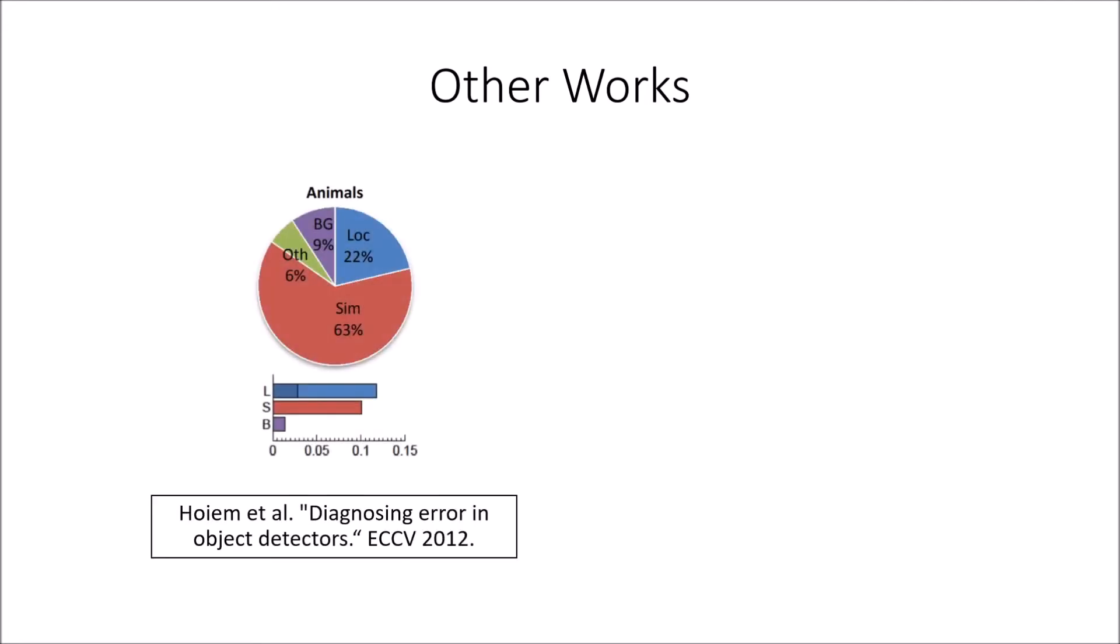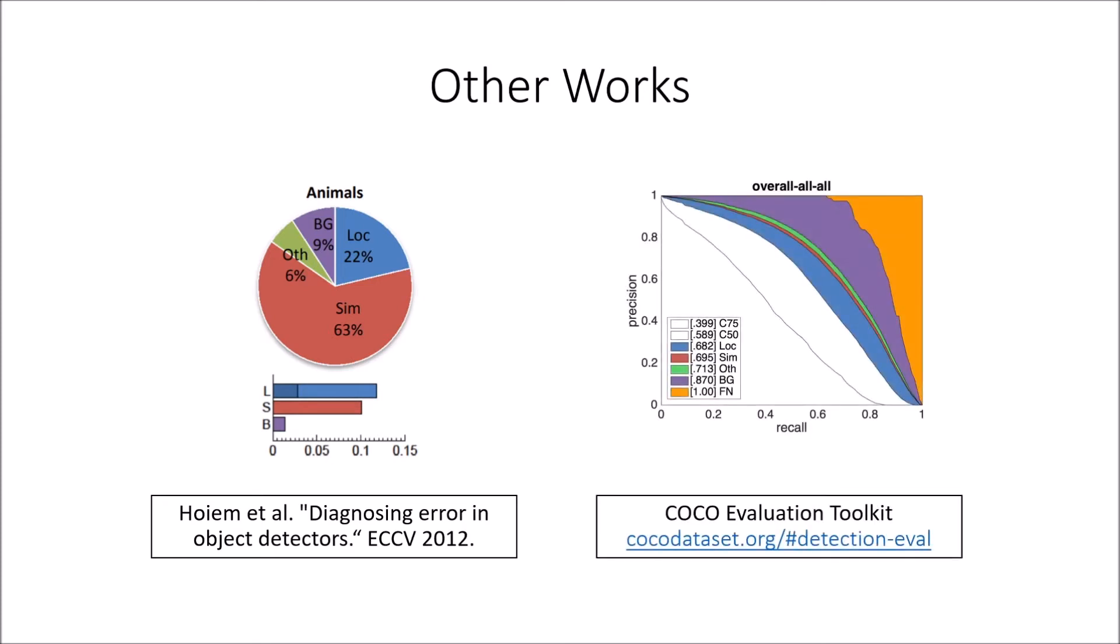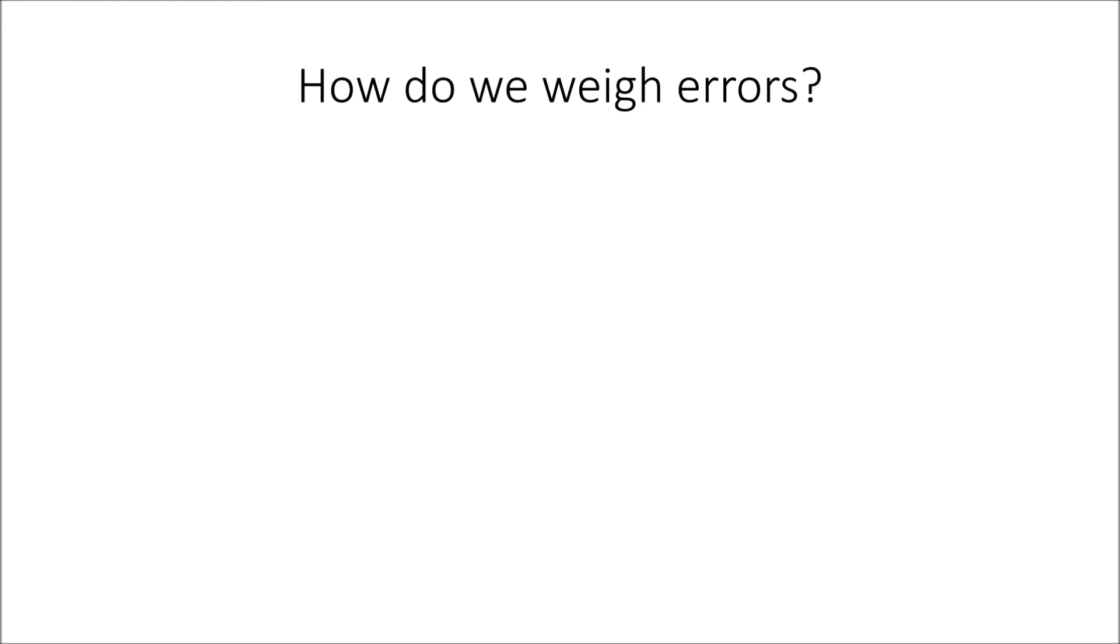There are only a few other works in this space that attempt to provide a useful summary of all the errors in a detection model, such as Derek Holm et al.'s seminal work on diagnosing errors in object detectors, and the analysis mode built into the COCO evaluation toolkit. However, both have issues, such as being dataset-specific or being difficult to interpret. So it's clear that we want to extract the contribution of each error in our models, but what's not clear is how we should weigh these contributions. Holm et al.'s work and the COCO eval toolkit both weigh errors differently, and both approaches have weaknesses.